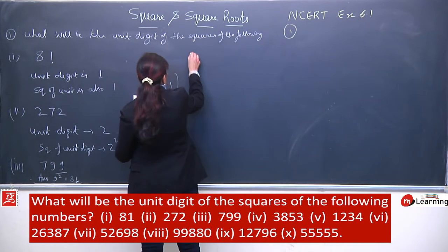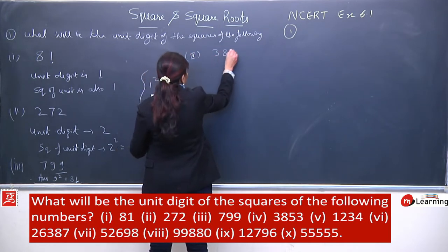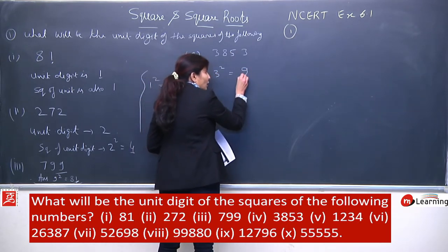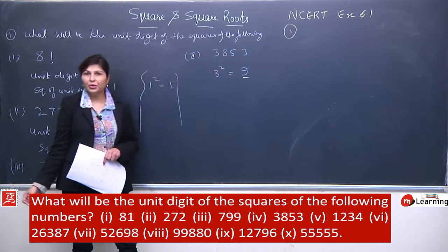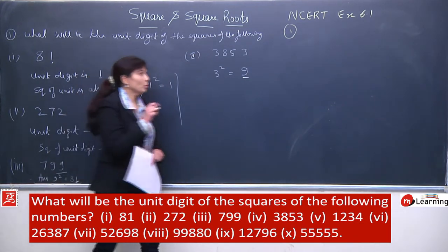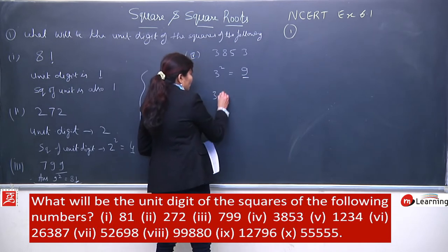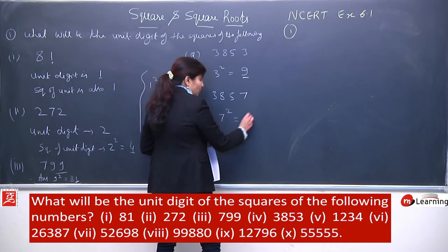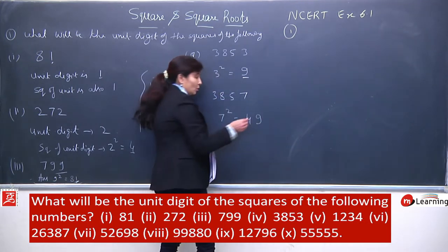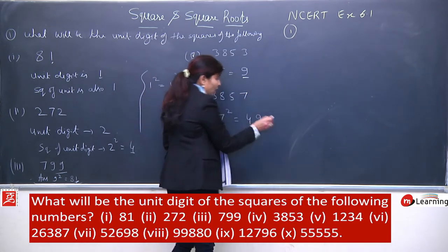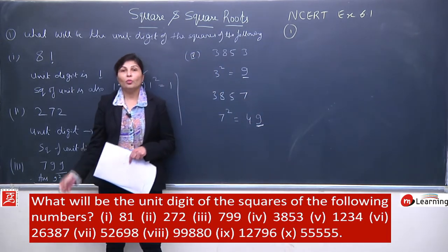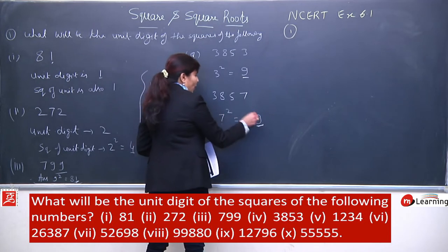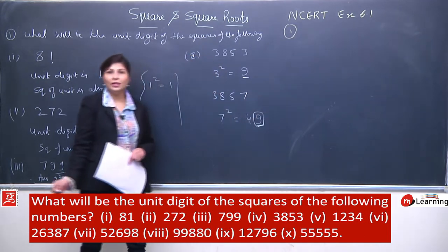Fourth number: the unit digit is 3, so square of 3 is 9. Since it's a single digit, this itself is the unit digit, so your answer will be 9. For example, if the number were 3857, then you take 7's square which is 49, and your answer would be only 9 — because the unit digit in 49 is 9. They are asking: after squaring the unit digit of the number in the question, what is the resulting unit digit?